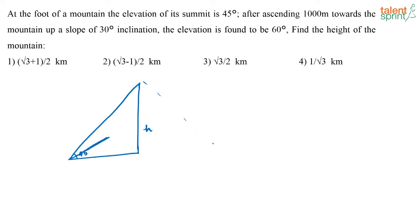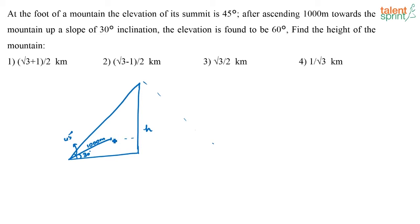This angle is 45 degrees. Somebody is climbing up this mountain with an inclination of 30 degrees, travelling a distance of 1000 meters. At that stopping point, the elevation is found to be 60 degrees — so the angle of elevation at that point is 60 degrees.